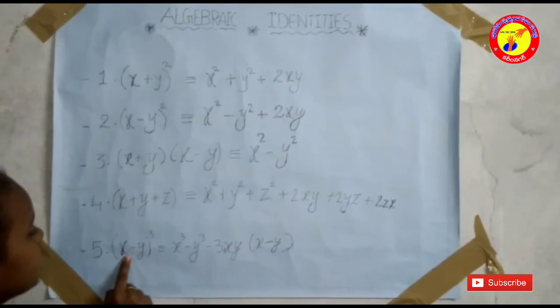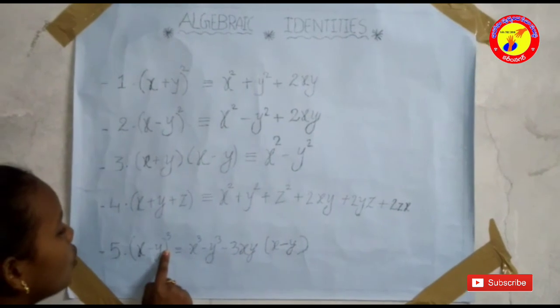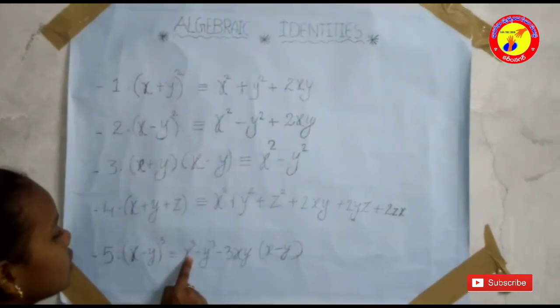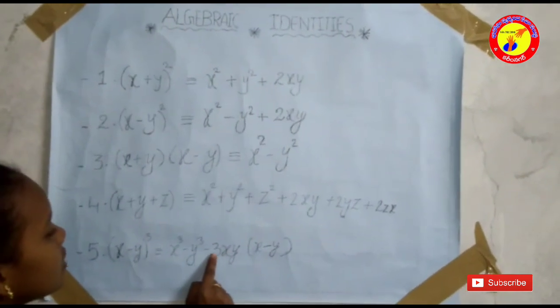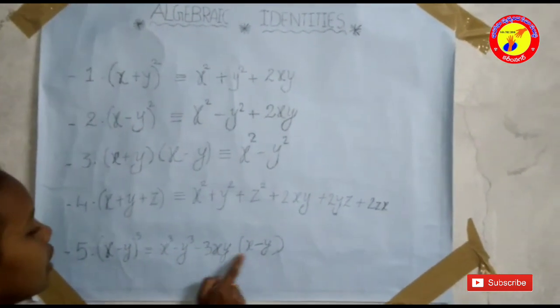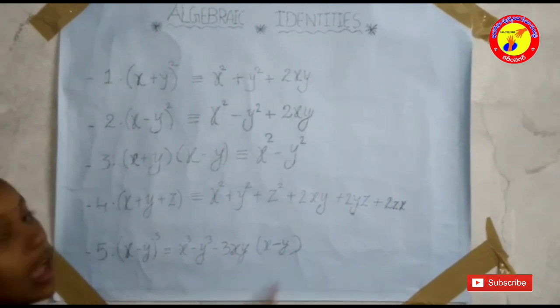Fifth, x minus y whole cube is equal to x cube minus y cube minus 3xy into x minus y.